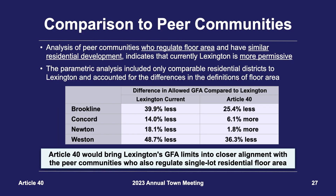An analysis of the zoning bylaws of peer communities who also regulate floor area and who have residential development similar to Lexington was performed. Those that met the criteria were Brookline, Concord, Newton, and Weston. For each municipality, an assessment was performed that included determining which residential districts are similar to Lexington's districts, and then compensating for differences in GFA definitions used in each municipality. The findings indicate that Lexington's current bylaw is substantially more permissive than these like communities. If Article 40 were adopted, Lexington would be brought much closer in alignment — not the most permissive, nor the most restrictive, but achieving a balance in between.